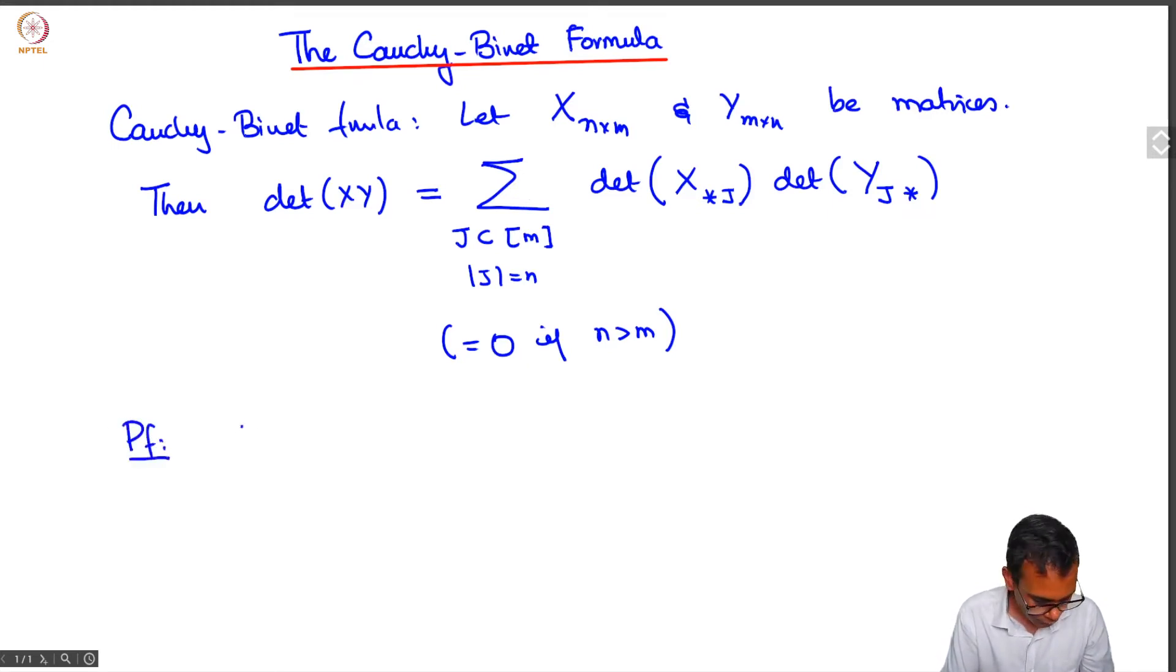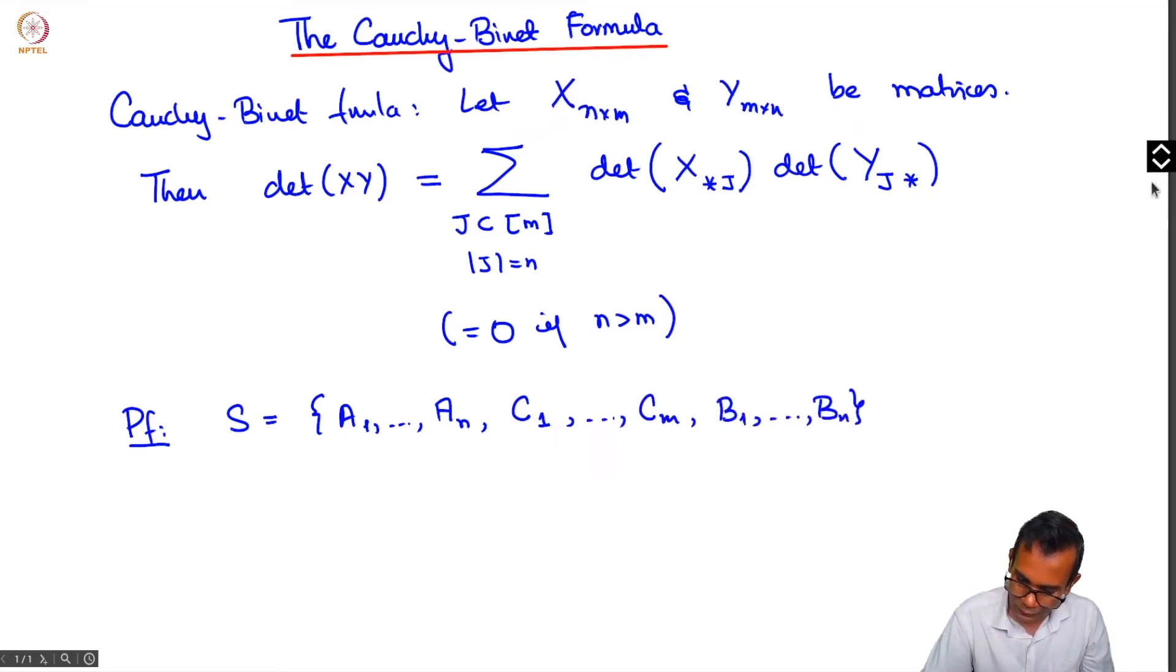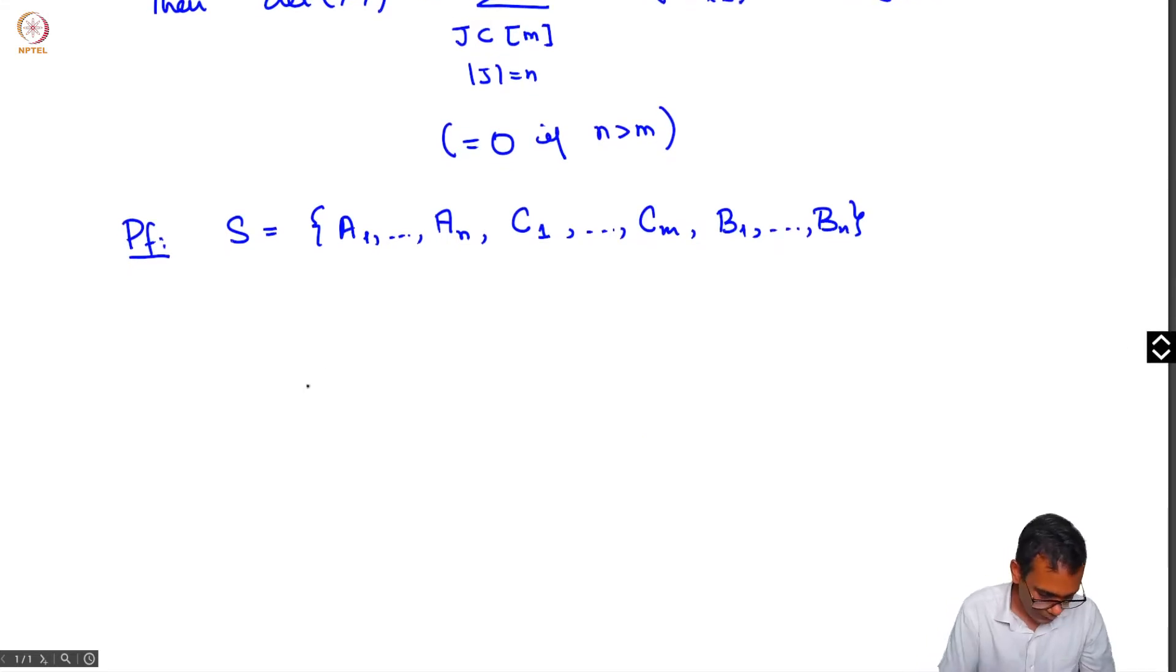Now for the proof, take s to be a1 up to an. I will insert m more nodes c1 up to cm, and then b1 up to bn. Let me draw this in a small example where n equals 3 and m equals 4. So we have a1, a2, a3,